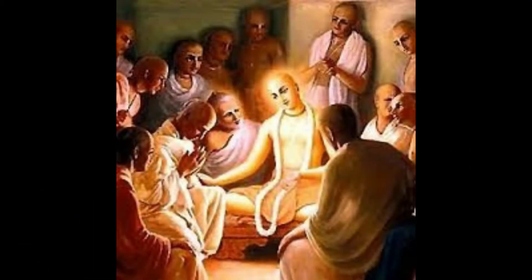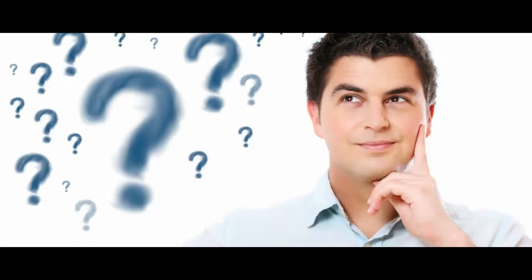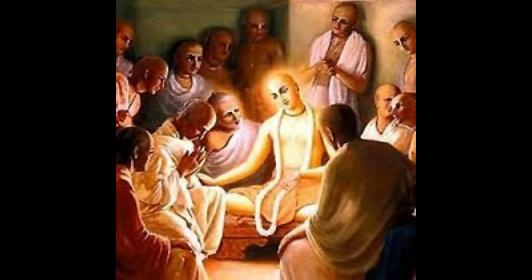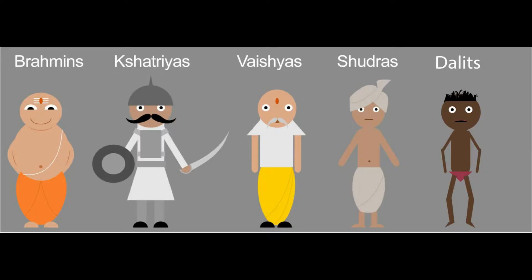Some saints and religious leaders questioned certain religious rituals and practices. They could see no benefit from them and felt they had to play a role in opening the minds of Hindus so that they could unite. For example, the caste system. Let's look at the caste system — what is it? The caste system divides Hindus into four main categories.